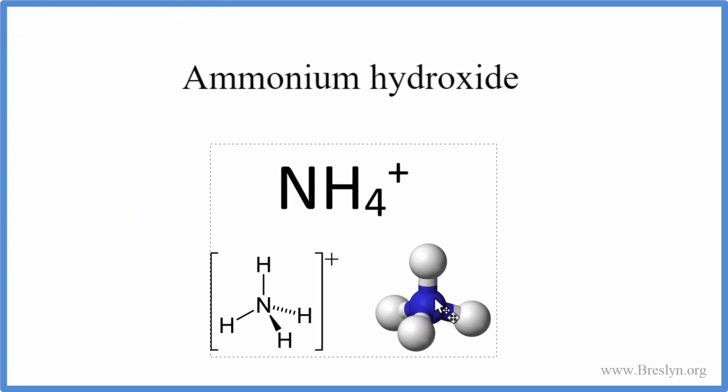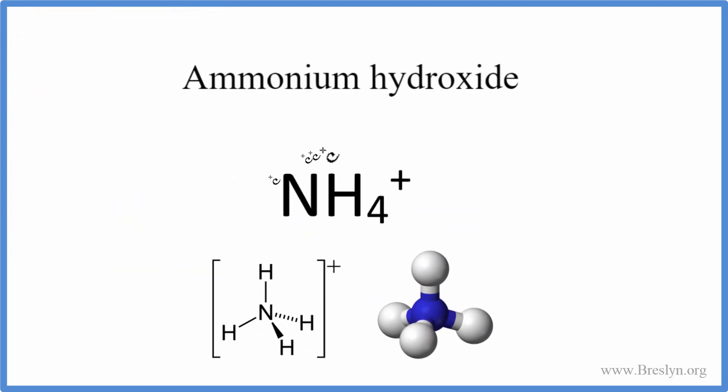So we have NH4+, that's the ammonium ion, and for the formula we'll write NH4+. Next we need to write the formula for the hydroxide ion.